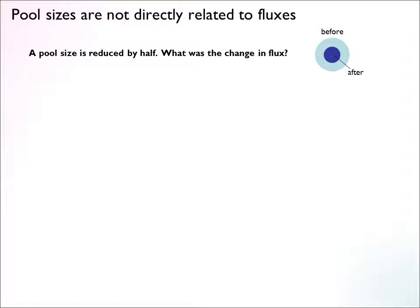So how do we measure fluxes? One common type of data in the literature is the measurement of pool sizes — the intracellular concentration of a metabolite. People often argue that if pool sizes change, then fluxes must have changed, and usually it does indicate something has happened near that metabolite. But it's not easy to draw direct conclusions about fluxes from this. Consider an experiment where you treat cells and an interesting metabolite's pool size goes down by 50%. What could be the change in flux?